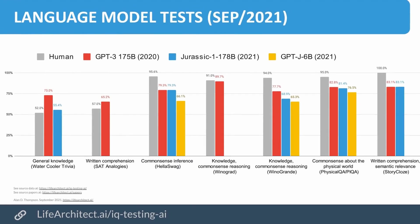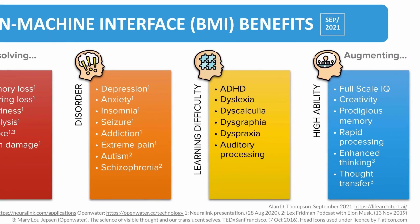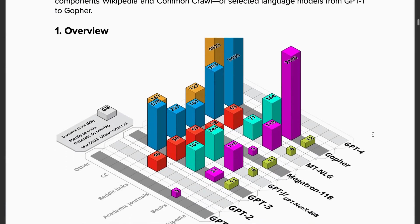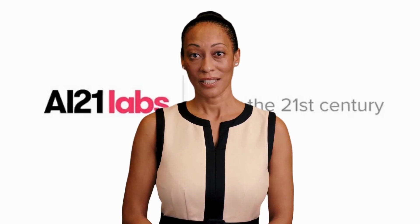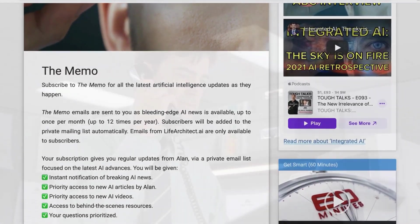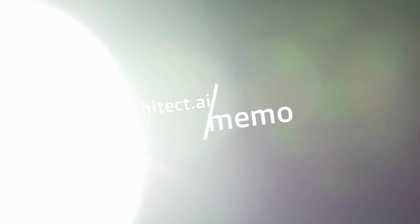Did you see the memo about this? The memo is my private mailing list, giving you new stories and practical insights on the latest in artificial intelligence. Jump into the memo with a monthly or annual subscription to receive priority access to AI papers, videos, and news that matters. Lifearchitect.ai/memo.